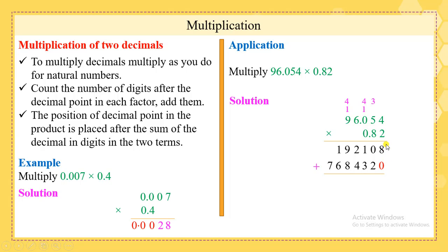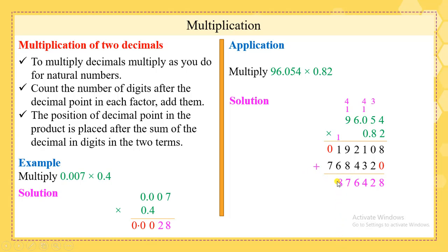It is time now to add the products of these two numbers. Note that we didn't multiply 0 by the digits above it because the product would be 0. Put 0 in the empty place. 8 plus 0 is 8; 0 plus 2 is 2; 1 plus 3 is 4; 2 plus 4 is 6; 9 plus 8 is 17 — put 7 here and 1 above. 1 plus 6 is 7, then 8; 0 plus 7 is 7.